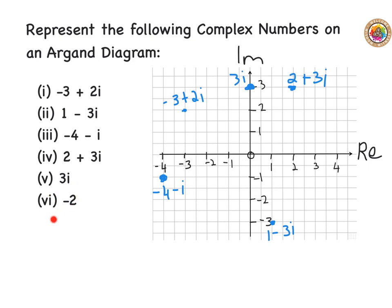For the last one, I have minus two. I know that's minus two plus zero i, so it's just along the real number line. Here is minus two on the real axis, and I plot and label it minus two. That's pretty much it for the basics on plotting complex numbers on the Argand diagram.